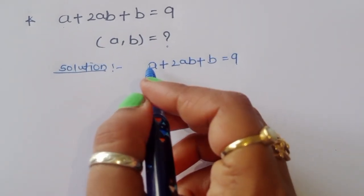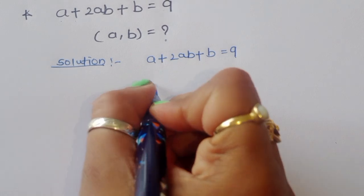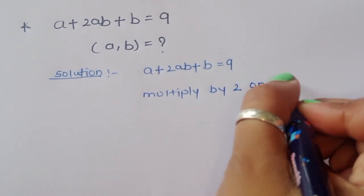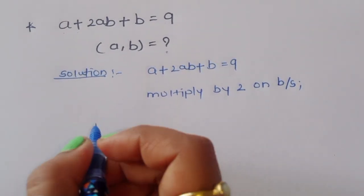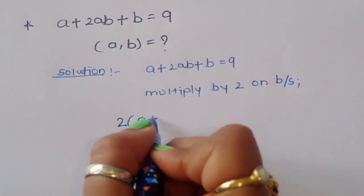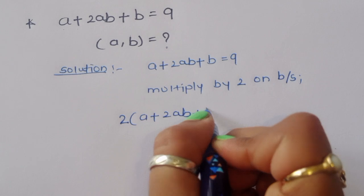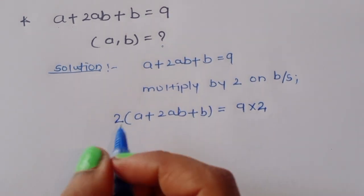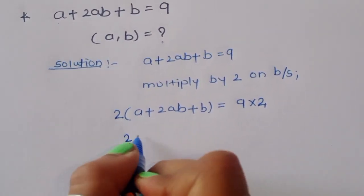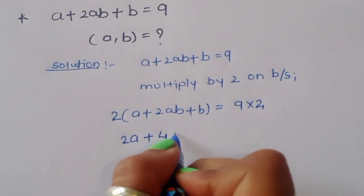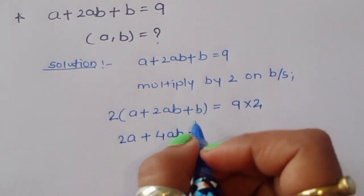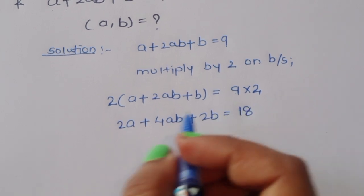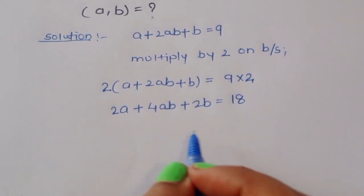We can multiply by 2 on both sides. Then we will get 2 times (a plus 2ab plus b) is equal to 9 times 2. Now 2 times a gives 2a, plus 4ab, plus 2b, is equal to 18.